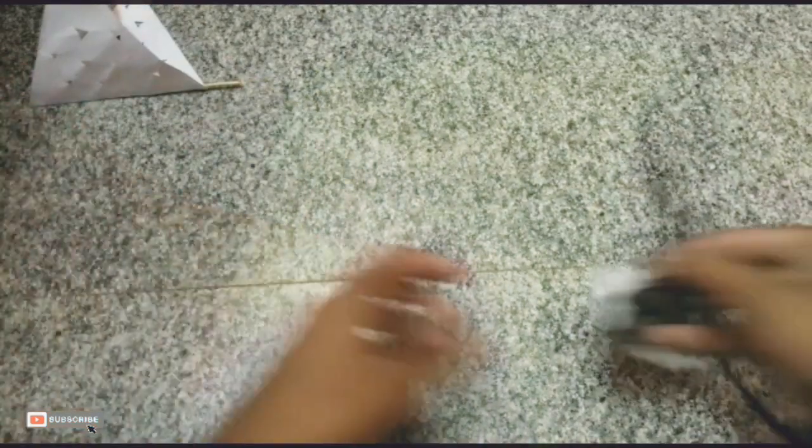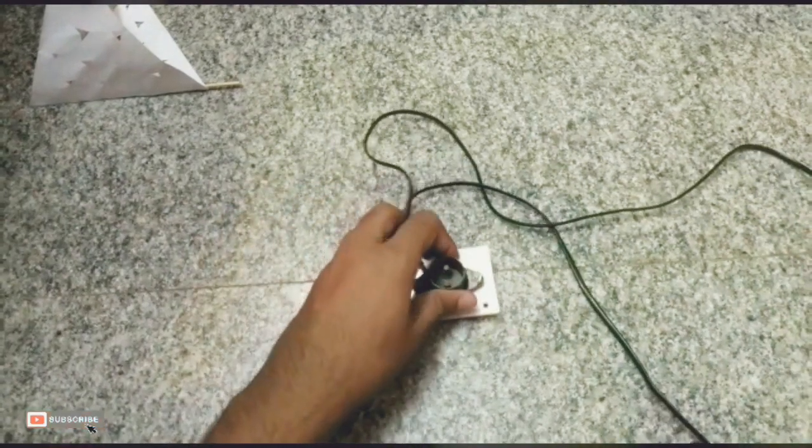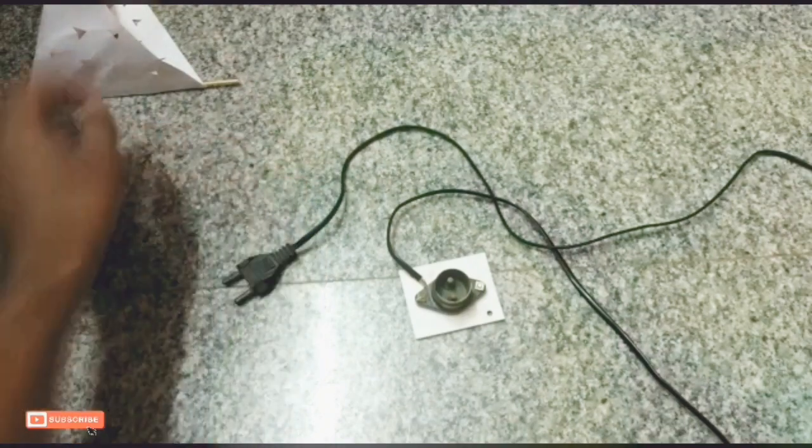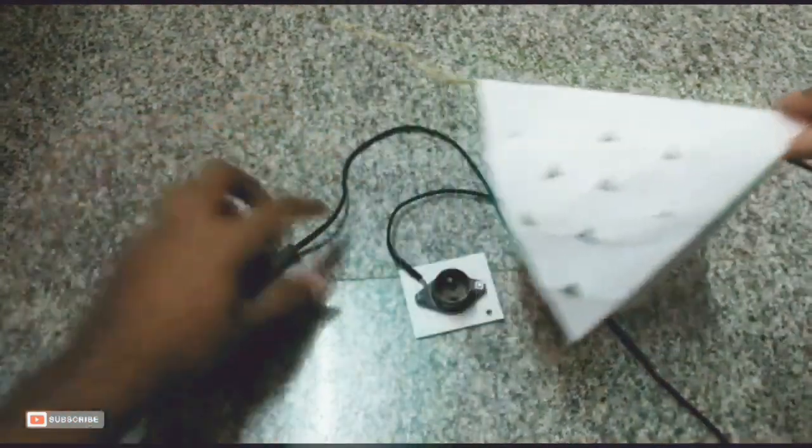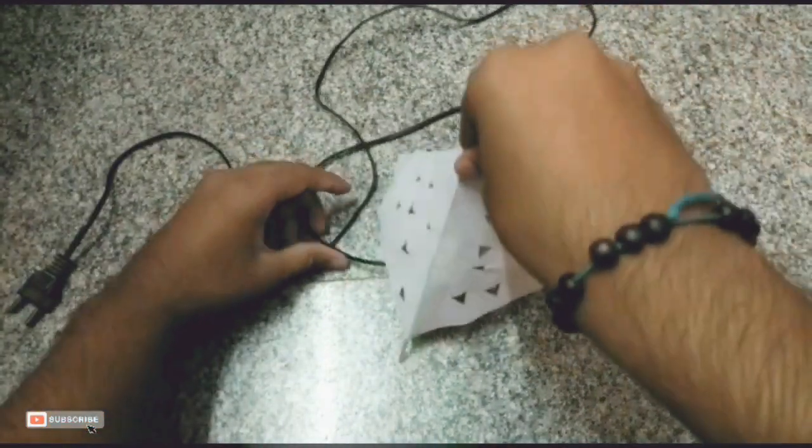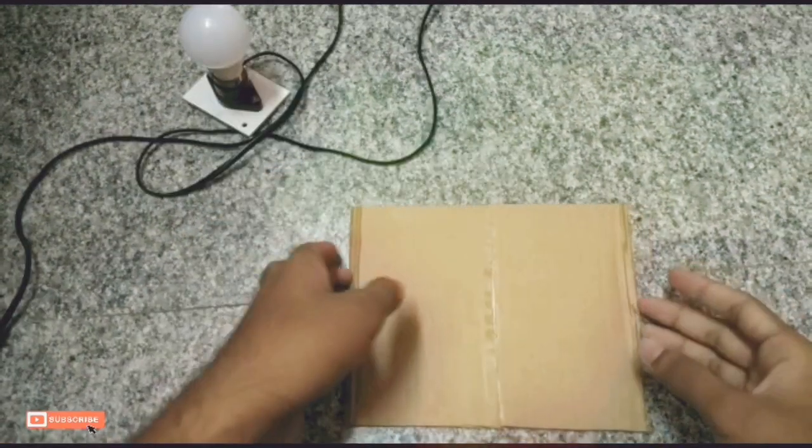Now keep the triangle aside and take a bulb holder circuit. Let's check it by placing the triangle on it. Seems to be good or not? Oh, it seems to be very dull and not nice.